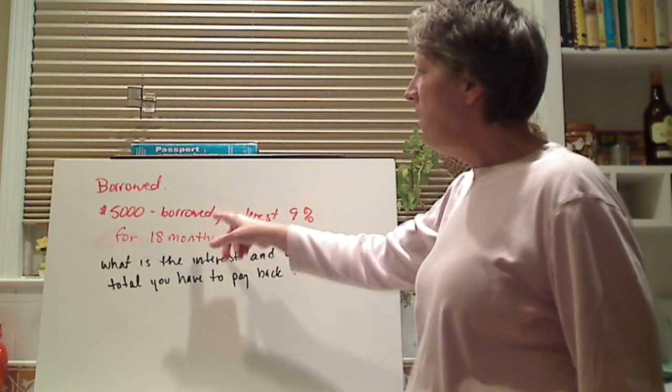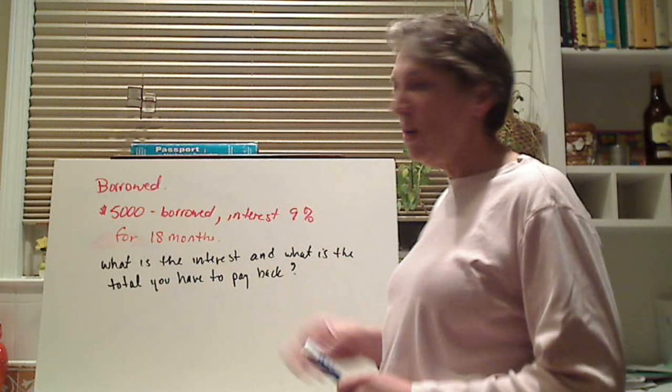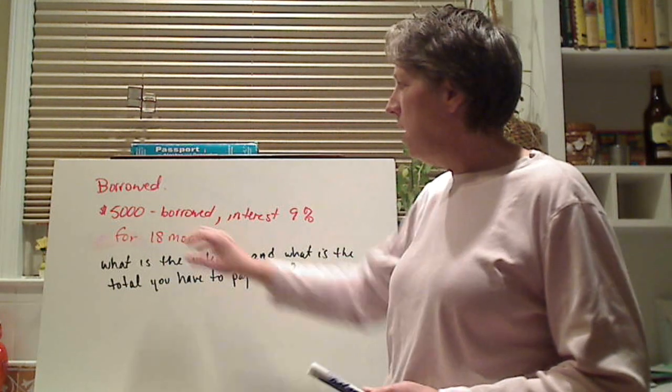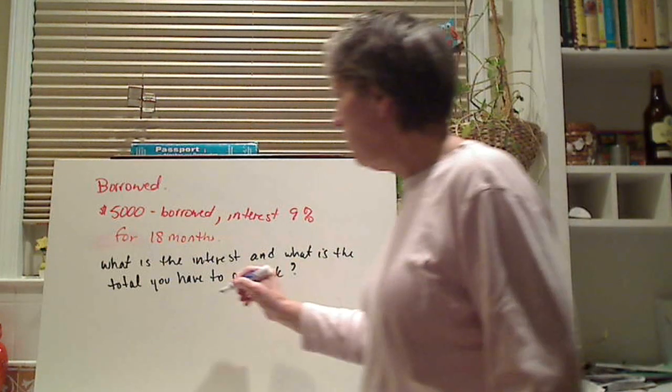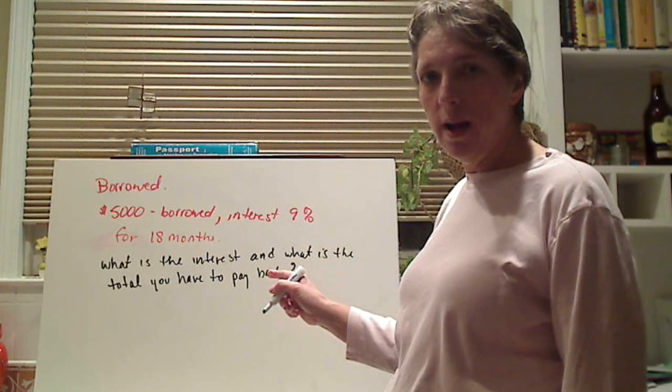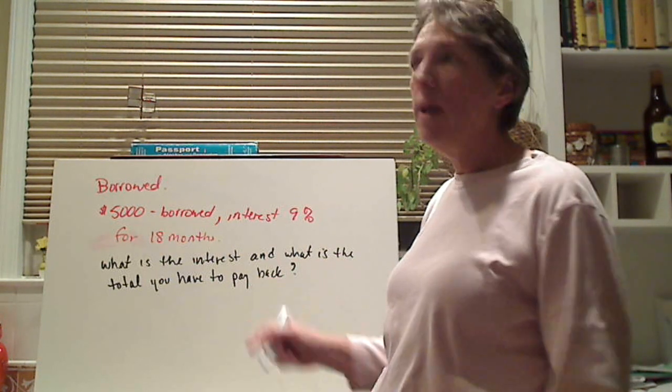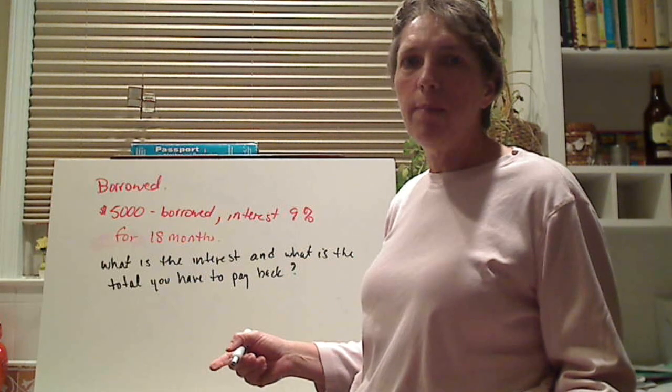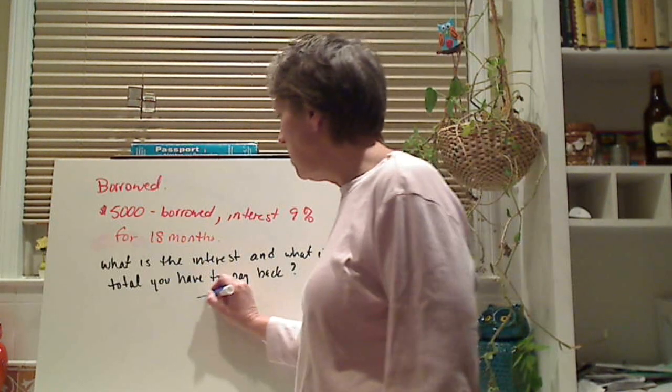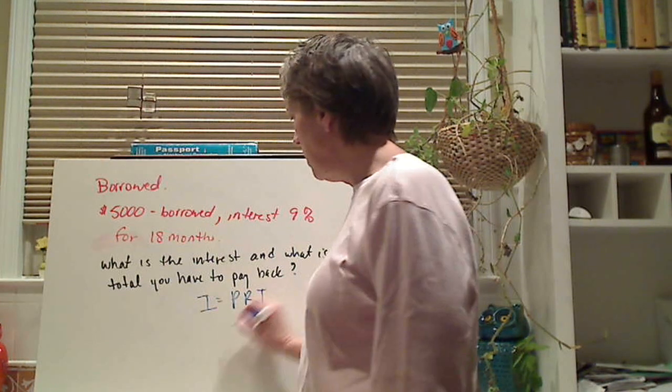Here we borrowed $5,000. We have an interest of 9%, and we've done it for 18 months. So the first thing is, what is the interest that I owe? Because I have to pay it back. And how much money do I have to pay back by the end? So the first thing I do is, I write my formula. I equals PRT.